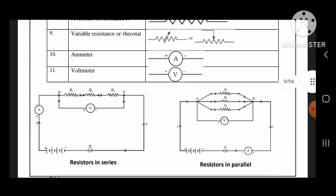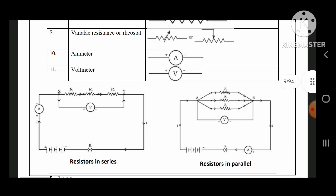Next: resistors in series and resistors in parallel. In series, resistors are connected in one line — R1, R2, R3. In parallel, resistors are connected one below the another.